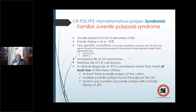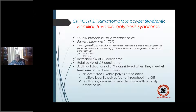There is an increased risk of GI cancers in familial JPS — both colorectal and other GI cancers — unlike sporadic juvenile polyps which have very rare risk. A clinical diagnosis of juvenile polyposis syndrome is considered when at least one of these criteria is met: at least three juvenile polyps of the colon, multiple juvenile polyps throughout the GI tract, or any number of juvenile polyps with a family history of JPS.